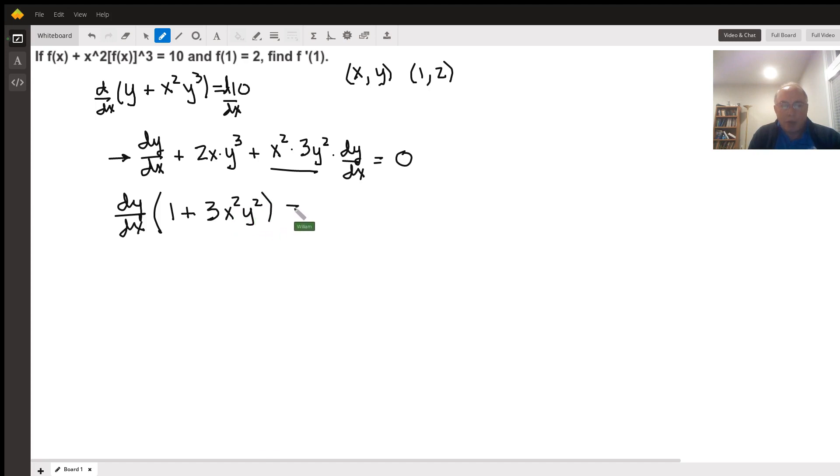And then equals, I'm going to move this part over to the other side, so subtract that from both sides, you get minus 2xy cubed. And now I can divide both sides by 1 plus 3x squared, y squared.